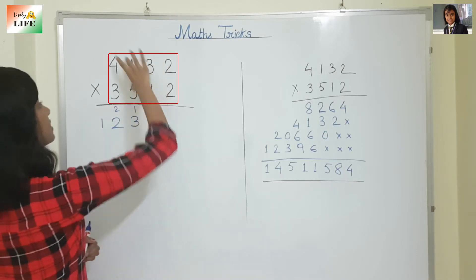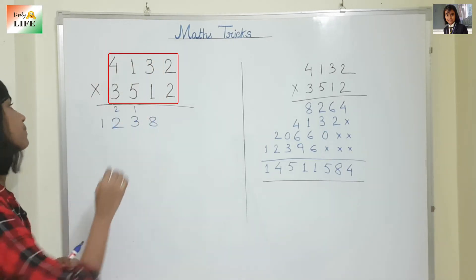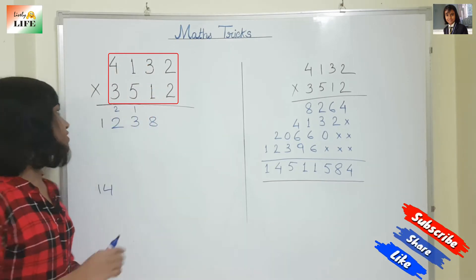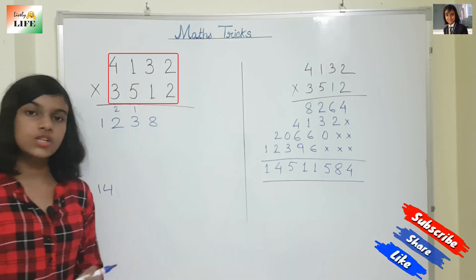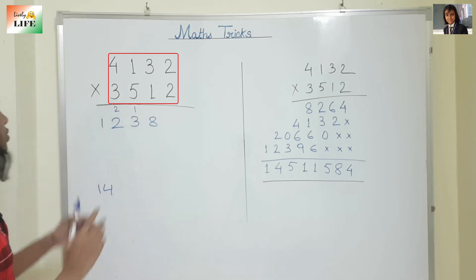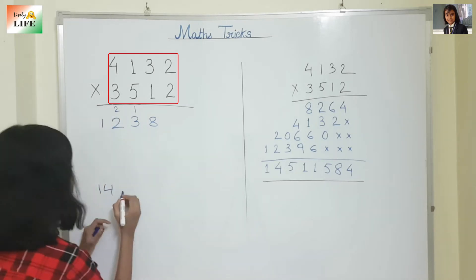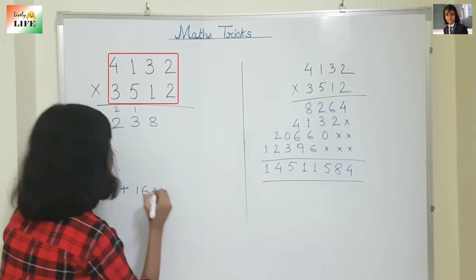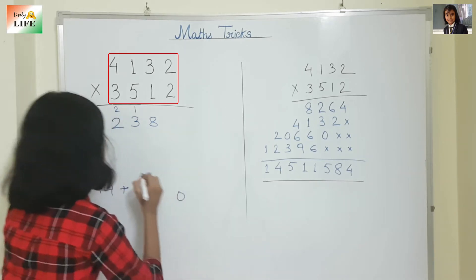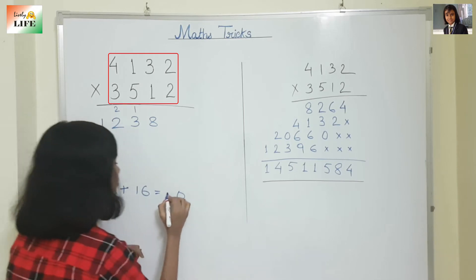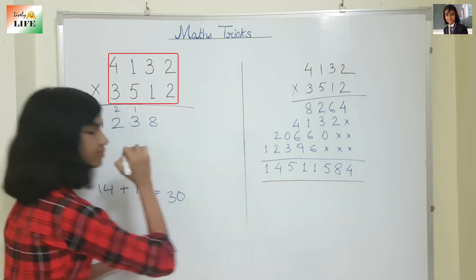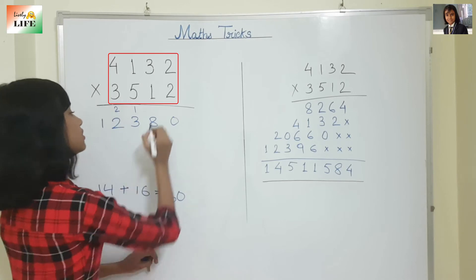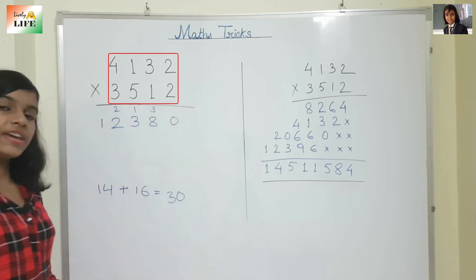Then we are also going to do cross multiplication: 5 into 3 is 15, 1 into 1 is 1, so 15 plus 1 is 16. So we need to add all of them: 14 plus 16. 6 plus 4 is 10, carry 1. 1 plus 2 plus 1 is... 30. So we write 0 and carry 3.